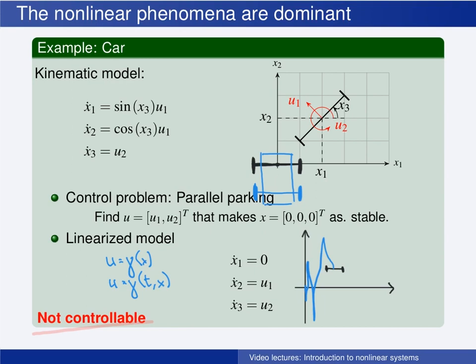And how many times we need to move back and forth depends a little on how good a driver we are. And in this way we can parallel park the car, making the origin an asymptotically stable equilibrium point.